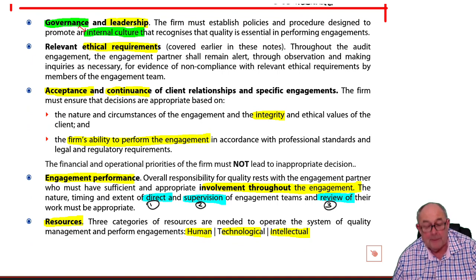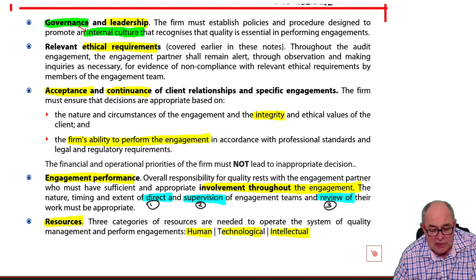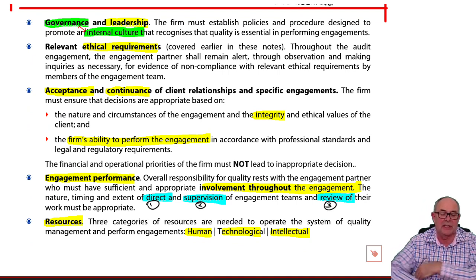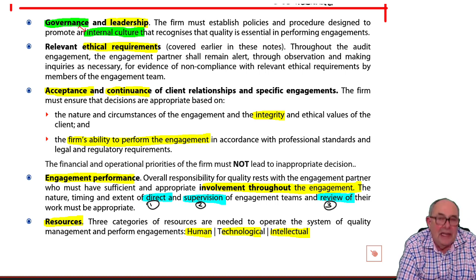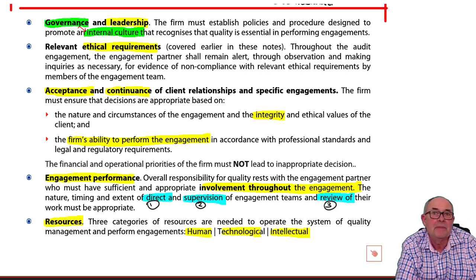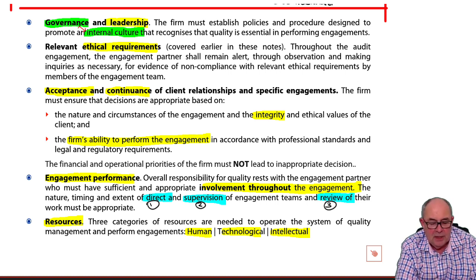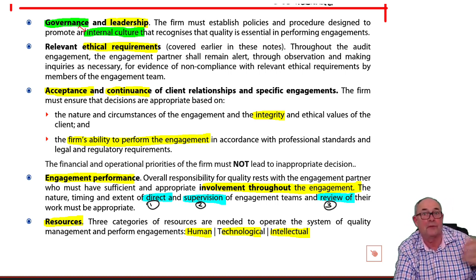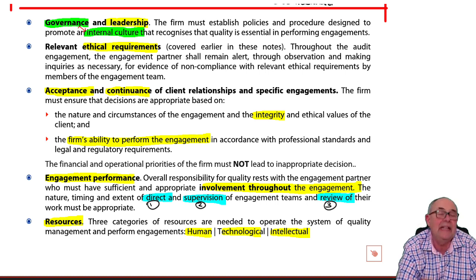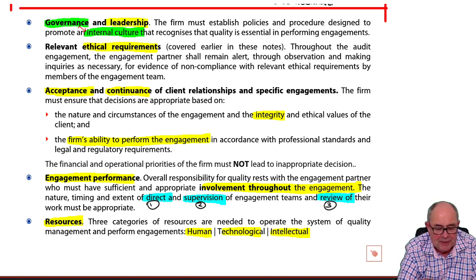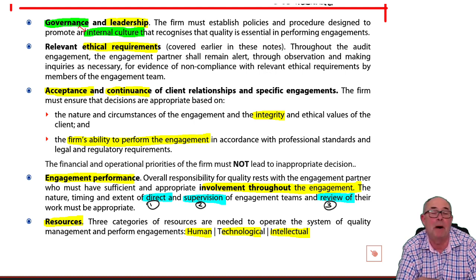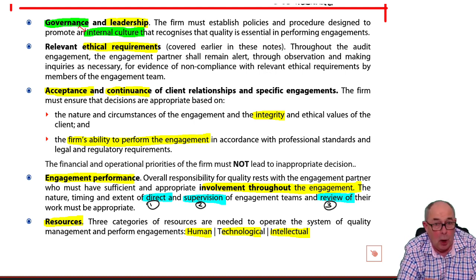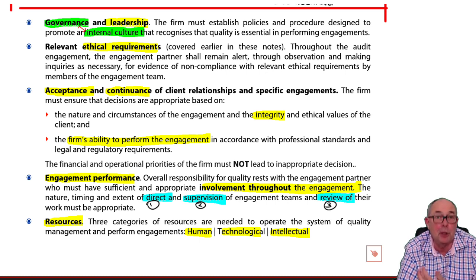Secondly, leadership — but notice it doesn't just say leadership, it says governance and leadership. There's a history of having a quality control partner in the basement. What we're now saying is it needs to be brought to the forefront of the firm, made part of governance. The very senior partners need to promote a culture making sure that leadership has appropriate authority.